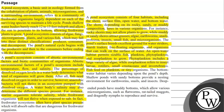Fish feed on plankton or tiny organisms. The bottom water habitat varies depending on the pond's depth. Shallow ponds with sandy bottoms provide a nesting environment for earthworms, snails and insects. Deep-ended ponds have muddy bottoms, which allow various microorganisms such as flatworms, rat-tailed maggots, and dragonfly nymphs to reproduce and survive.